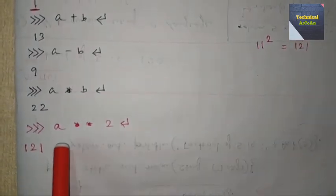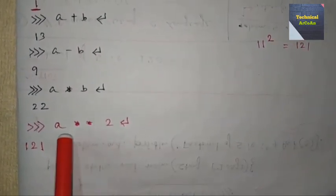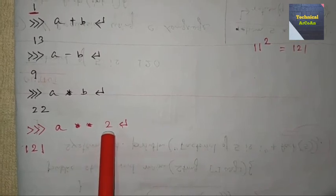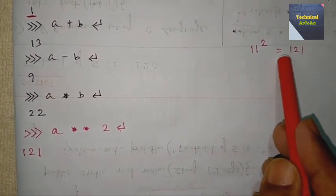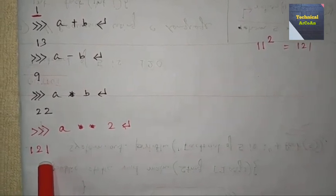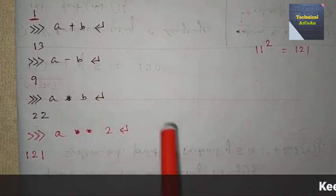Now when we use the power operator, suppose a ** 2. What does this mean? a is 11, so 11 squared equals 121, so the result will be 121.